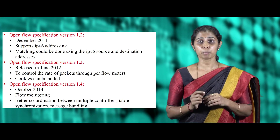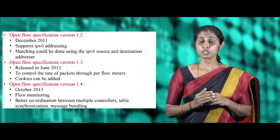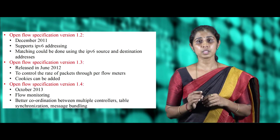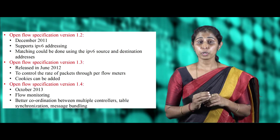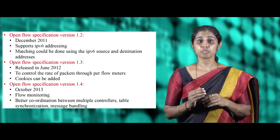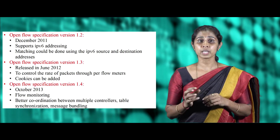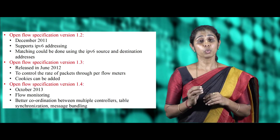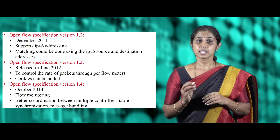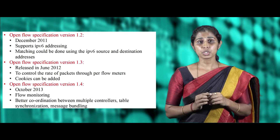OpenFlow specification version 1.3 was released in June 2012. The improvements from version 1.2 include the ability to control the rate of packets through per-flow meters, and cookies can be added to packets sent from the switch to the controller.